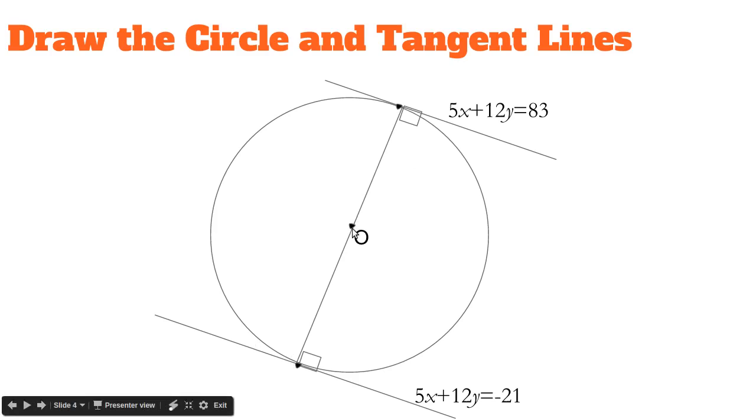I've drawn the center O and this is the whole circle. I've drawn the two radii from the center to the point of tangencies, which are perpendicular to the tangent lines, which is why I've drawn these two right angles in.